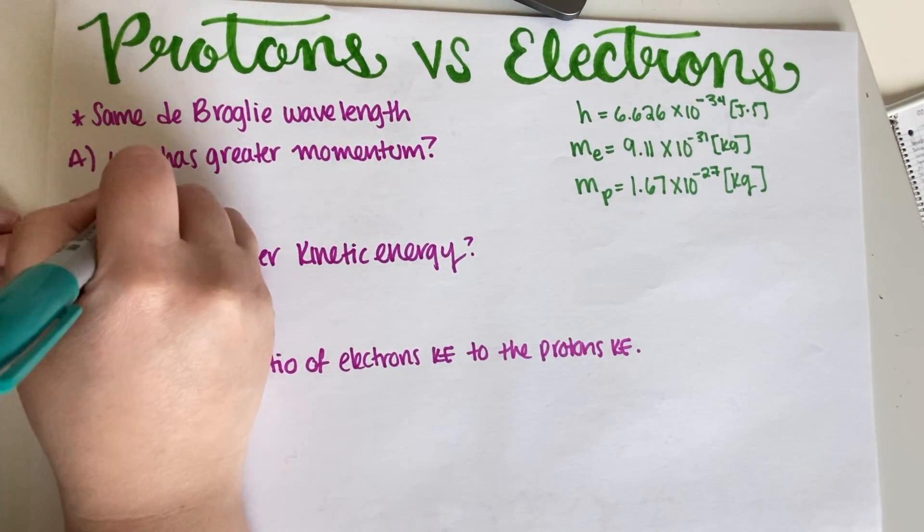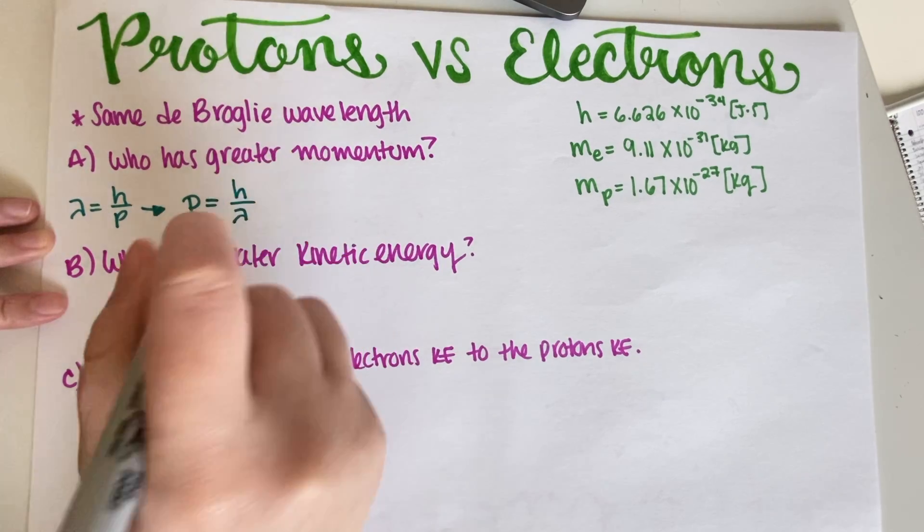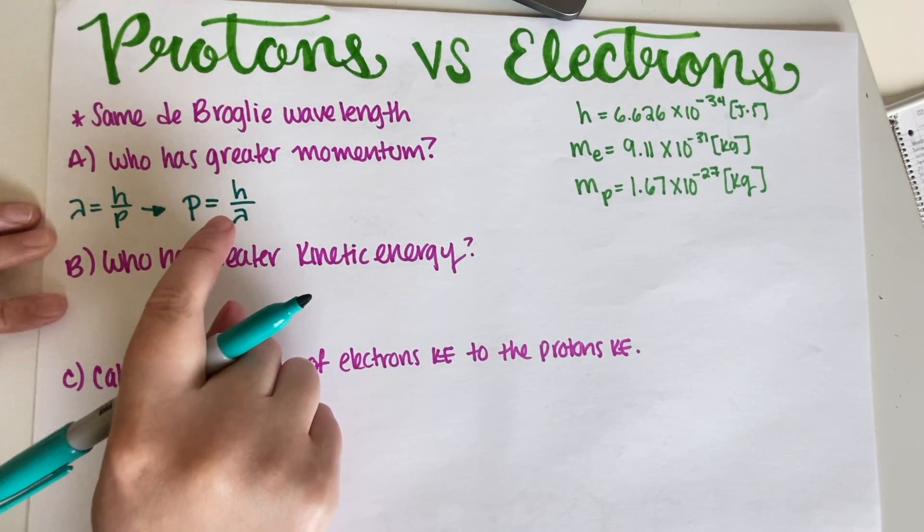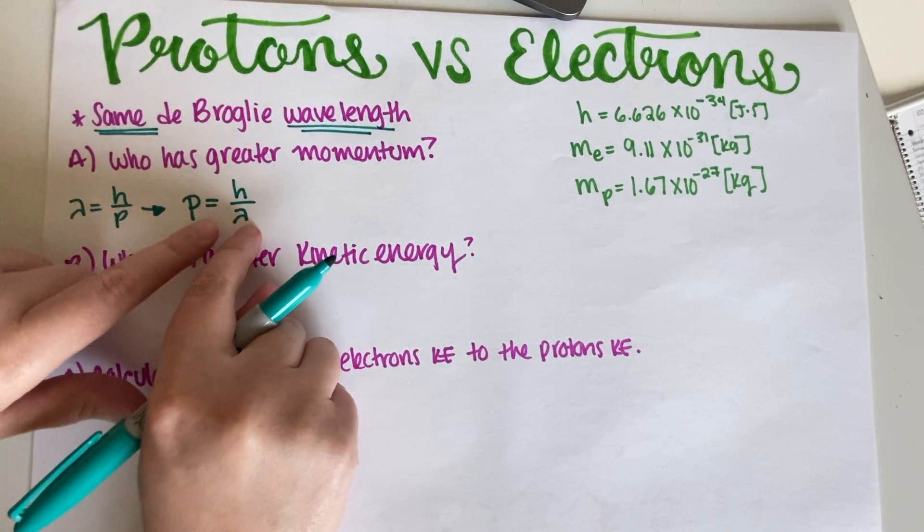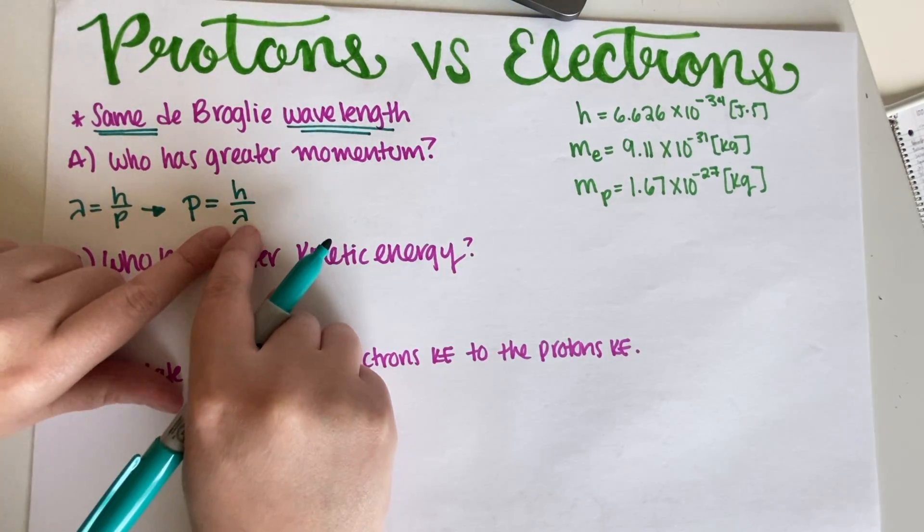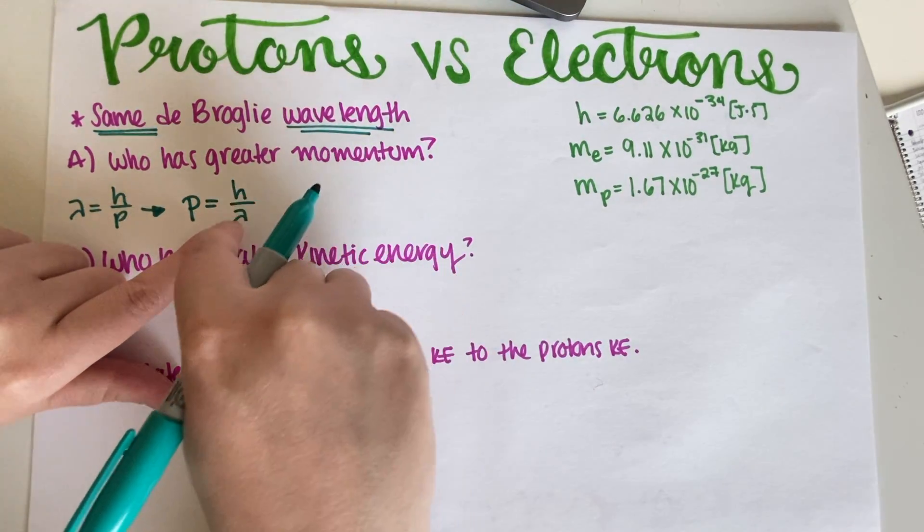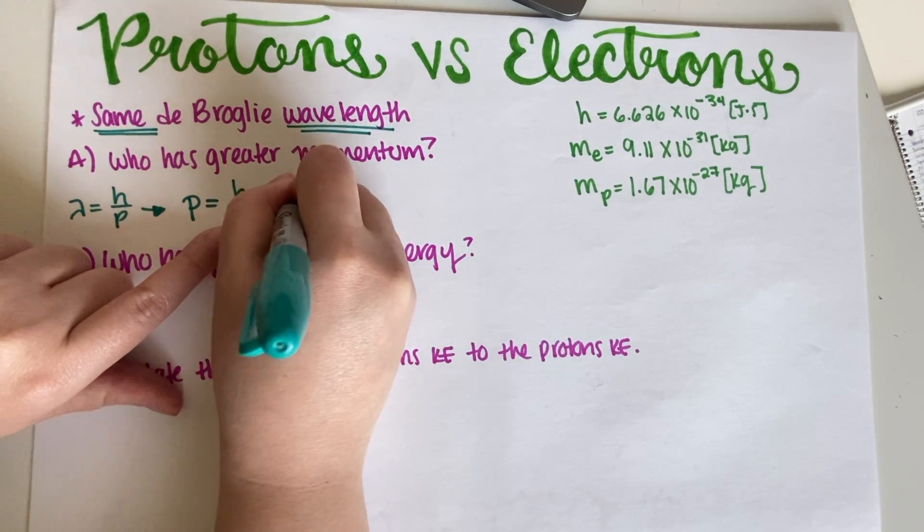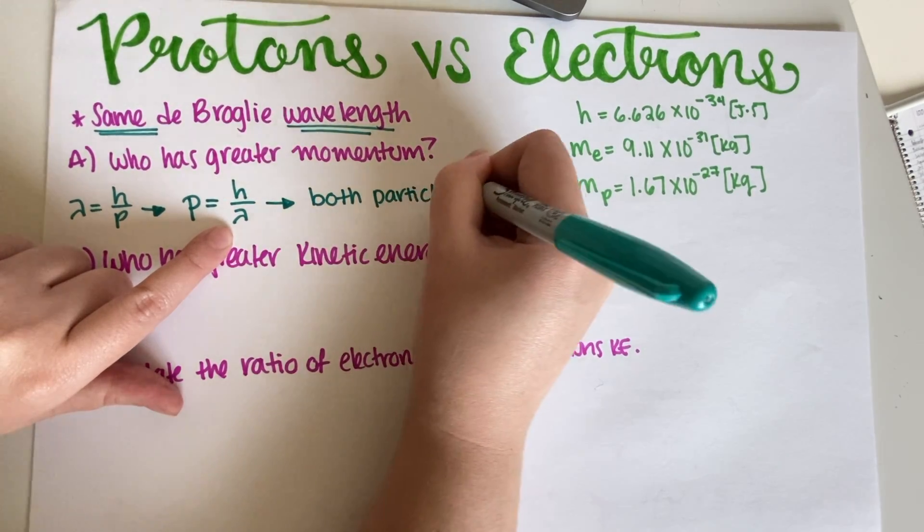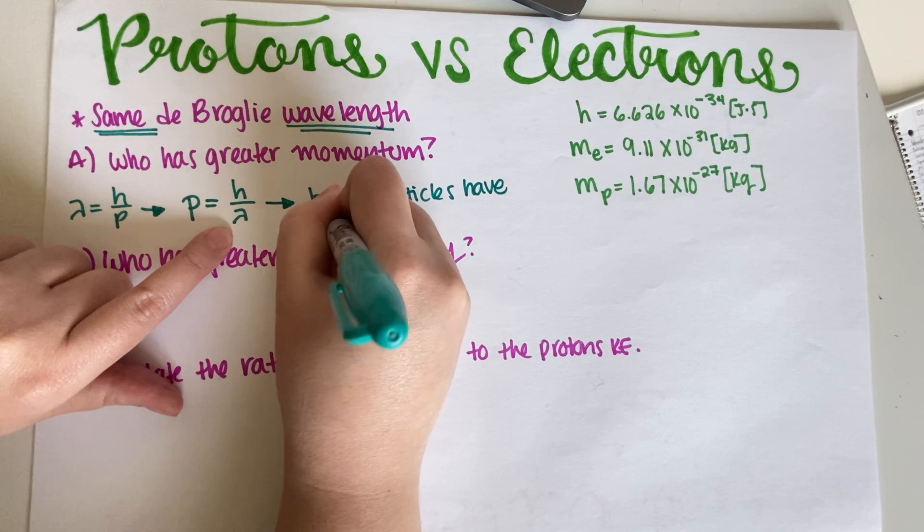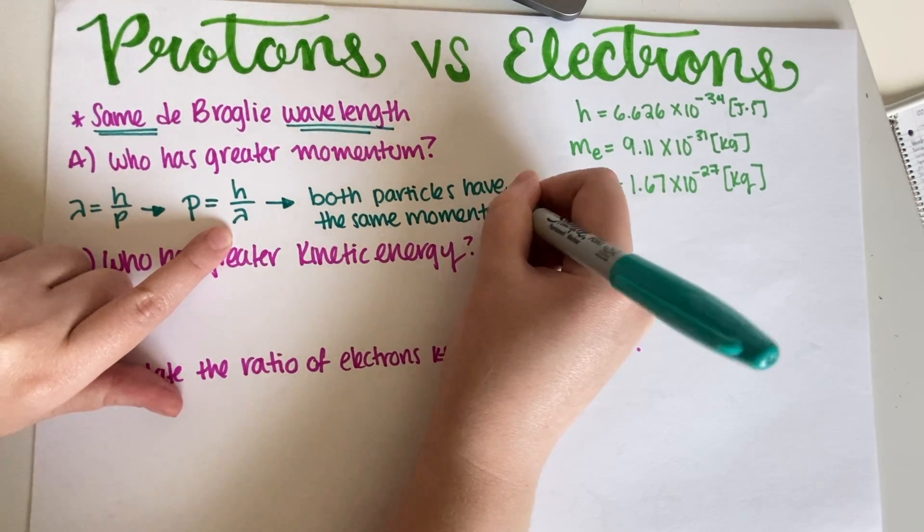If our equation is lambda equals H over P, then that means that momentum is equal to H over lambda. Now in this particular case, the problem is saying that they have the same wavelength, so both the proton and the electron have the same wavelength. And this H is just Planck's constant, so this is a constant and this is the same for both of them.